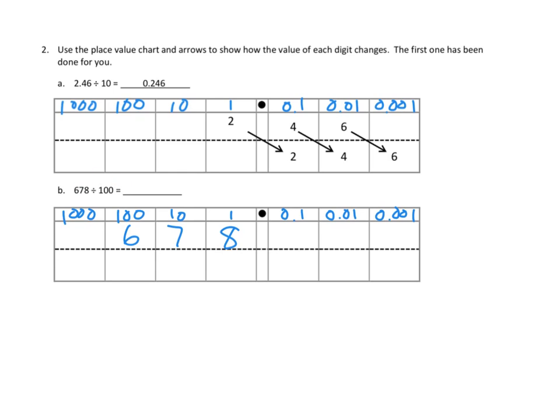But this time we are dividing by a hundred. I think we are going to need to move two whole place values to the right. I think our six hundreds, if we divided by a hundred, we would get six ones. And we have seven tens, and we divide by two place values, we would get seven tenths. And if we had eight ones, and we divide by two place values, we would get eight hundredths. So I think our answer would be 6.78.